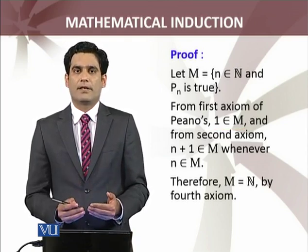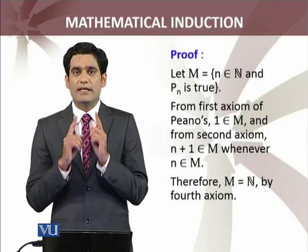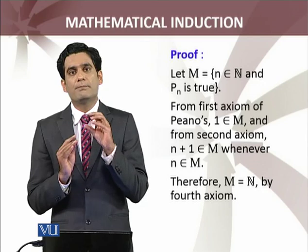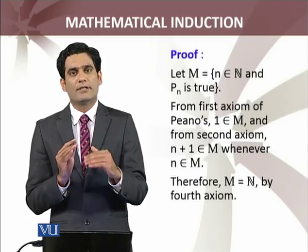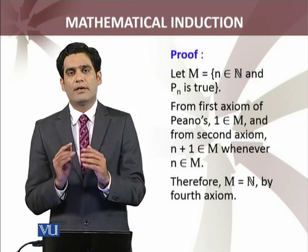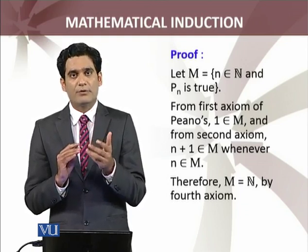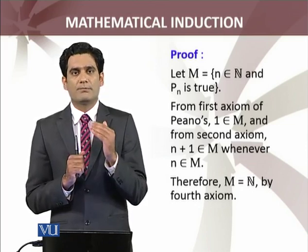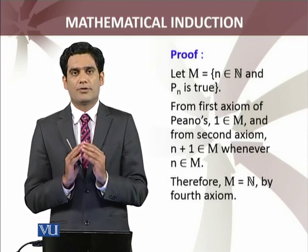So we have proved the principle of mathematical induction. By construction, we assembled into M those natural numbers for which Pn is true. By applying the Peano axioms, we showed that 1 belongs to M, and if n belongs to M then n+1 belongs to M. Therefore, by the Peano axioms, M equals the set of natural numbers. This means the propositions P1, P2, Pn, and so on are true for all natural numbers.